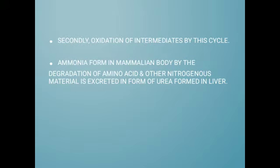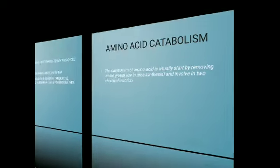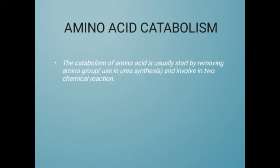Ammonia is formed in the liver. We know that ammonia is very toxic to our cells, so it is converted into urea and then released from our bodies in the form of urine.